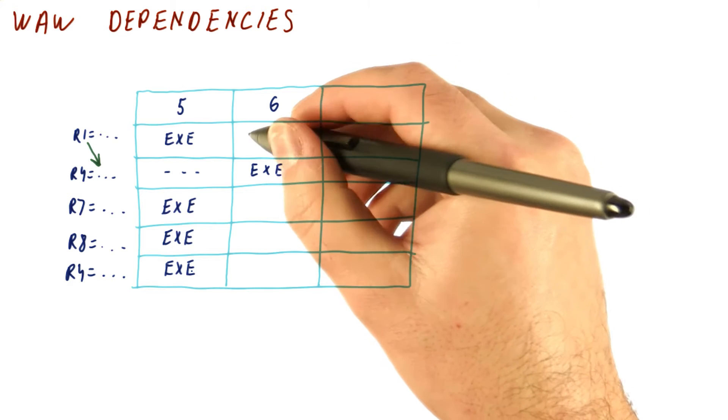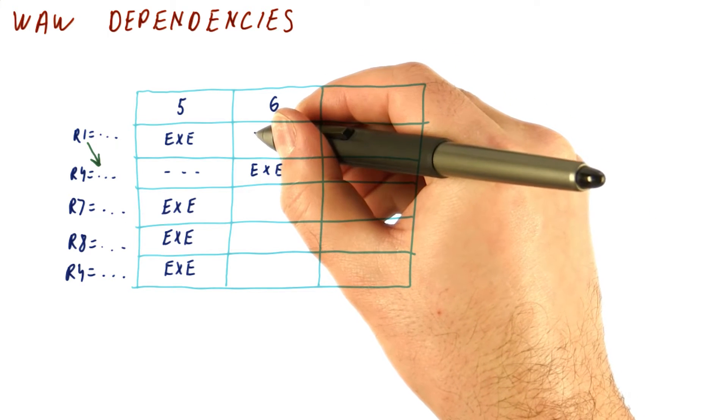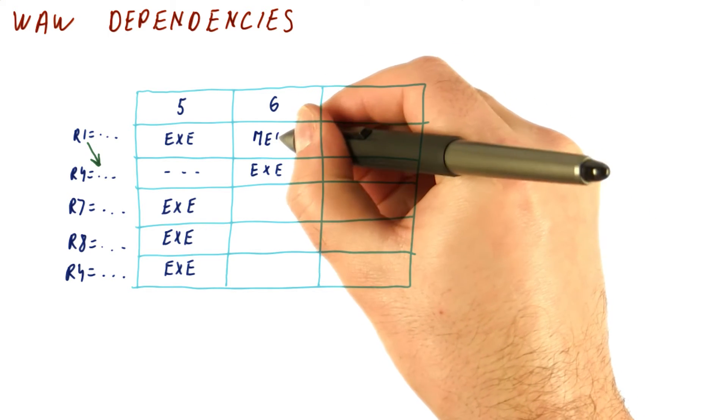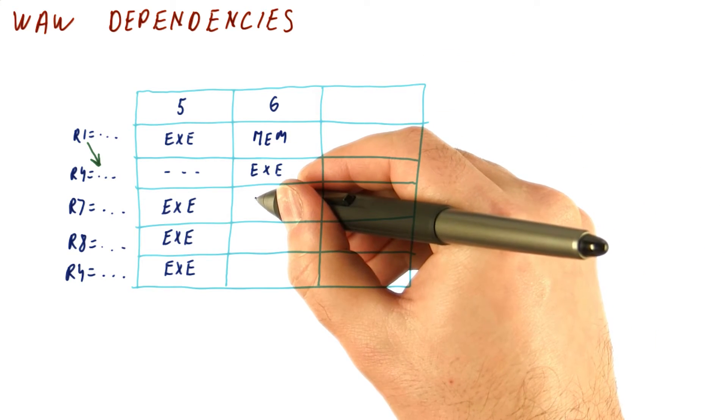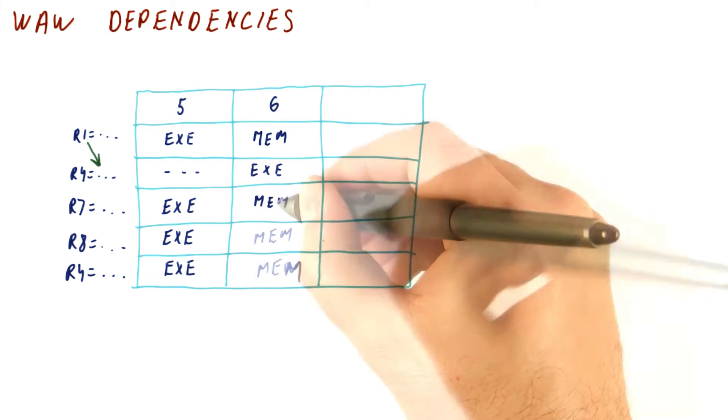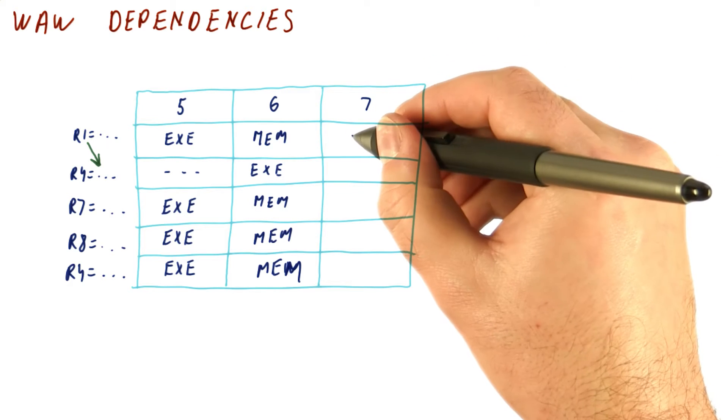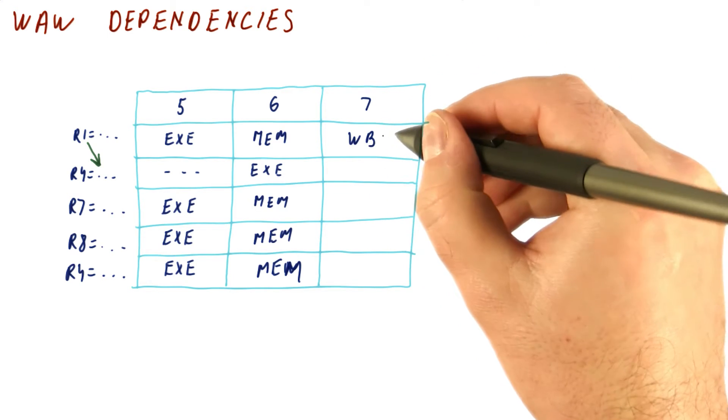Now in our five-stage pipeline, what's going to happen is this instruction is then going to move to the mem stage where it doesn't do anything because none of them are really memory instructions. And then so will these, and then what's going to happen is in the next cycle, this instruction will write its result.